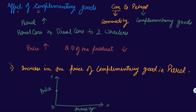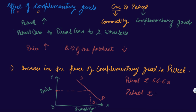Note that there is no change in the price of the car itself — the price of the car remains constant. The initial demand of the car is Q1, when the petrol price is around 66.80 rupees. Now, when the petrol price increases to around 73.76 rupees, the quantity demanded of the car decreases. This new lower quantity demanded is Q2.